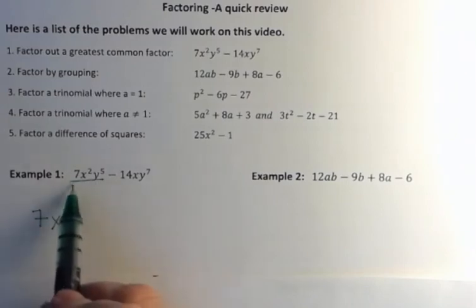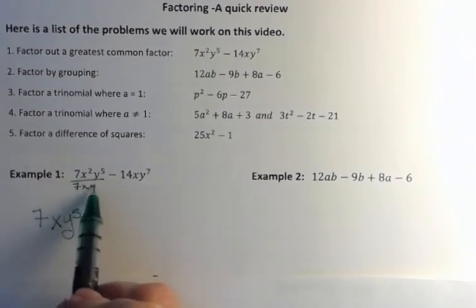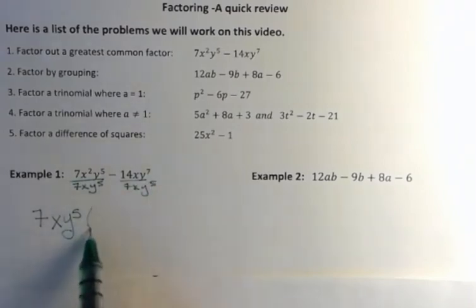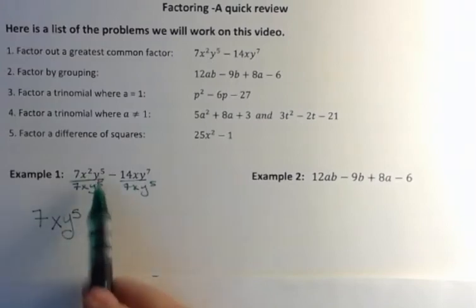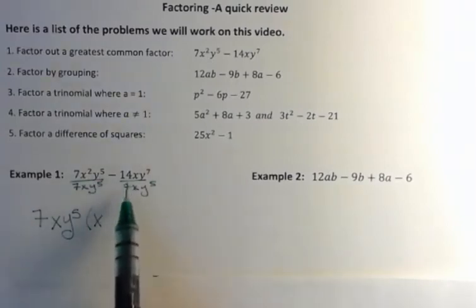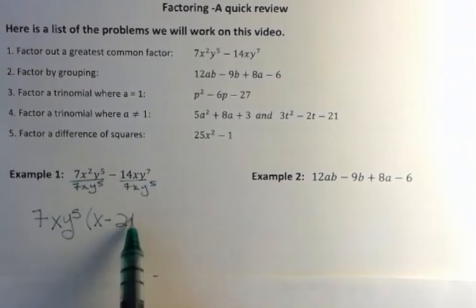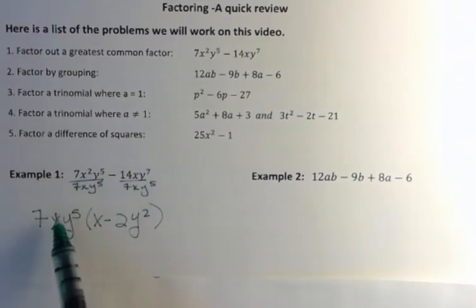And so I'm going to divide both of these by 7xy to the fifth. What I'm going to get here is the 7s cancel, I have 1 extra x, and I don't have any extra y's, so I just have x. And the second one, 14 over 7 is 2. I don't have any x's, but I have 2 additional y's, so I have y squared. Remember, you can always check your factoring by distributing. If you multiply this back through, you should get what you started with.